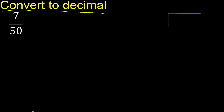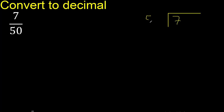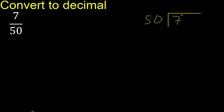7 divided by 50. Since 7 is less than 50, we complete with 0 — here, 0 point.